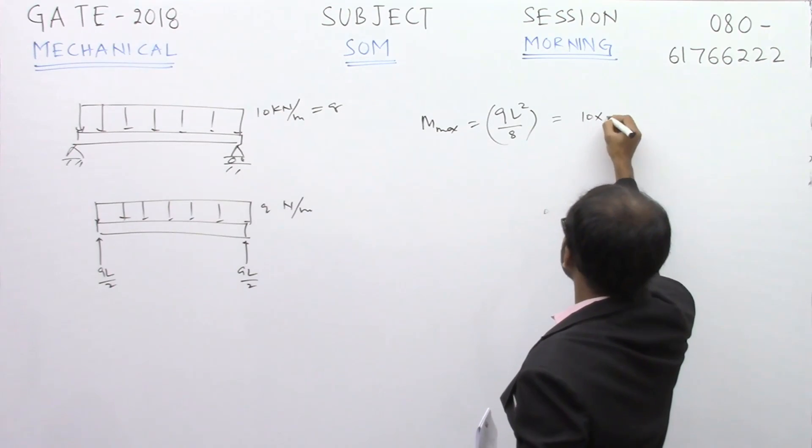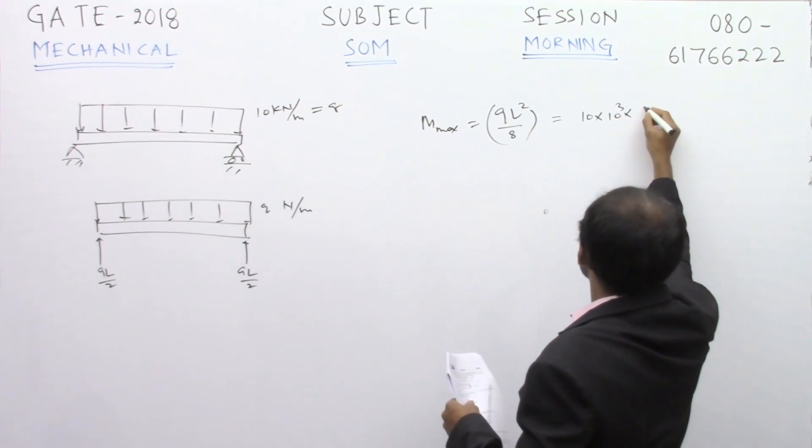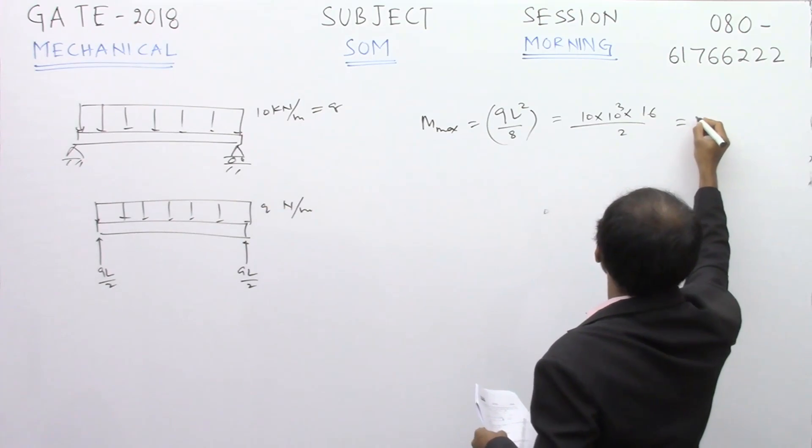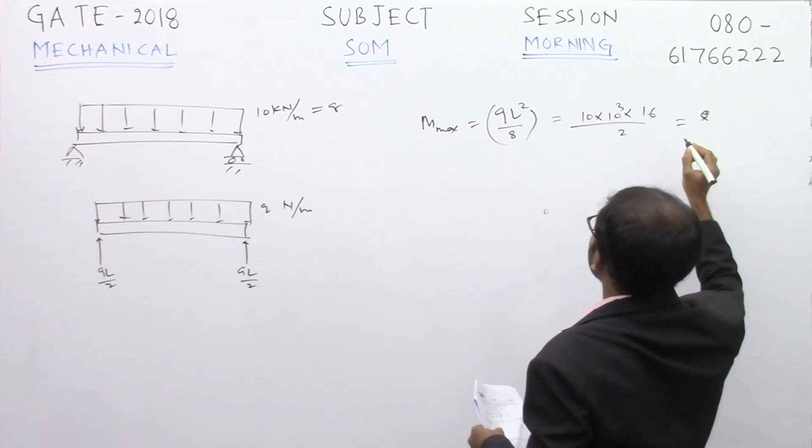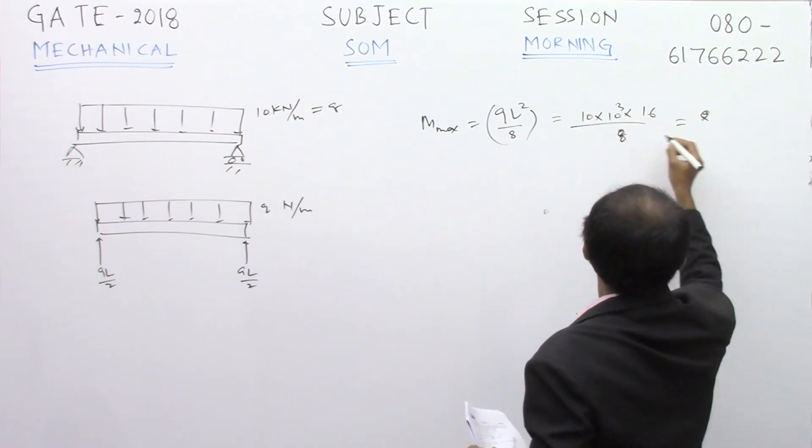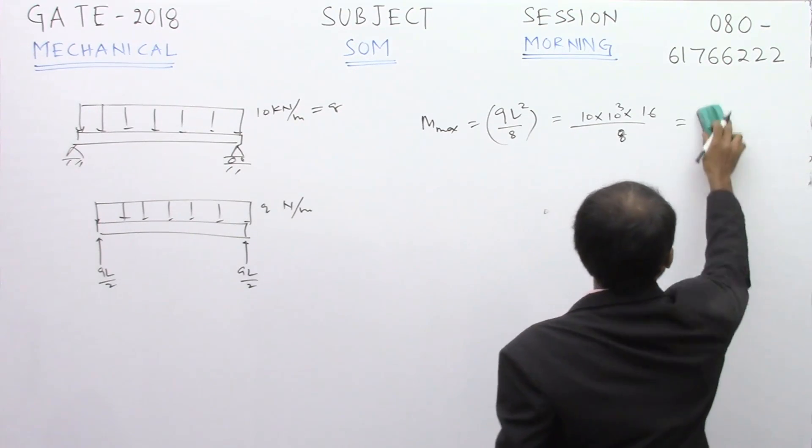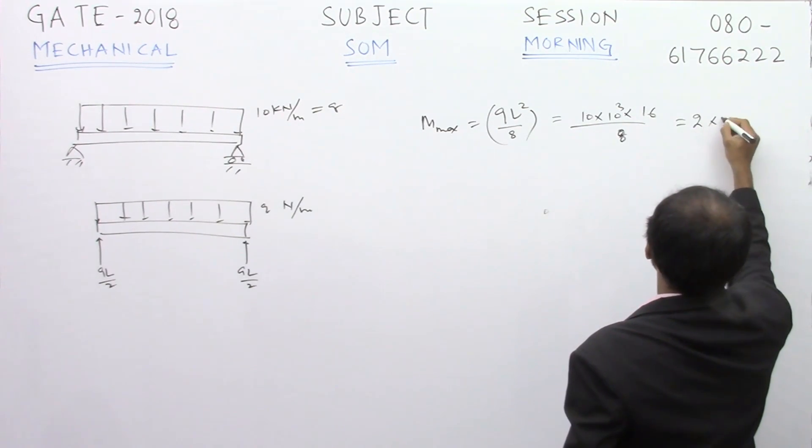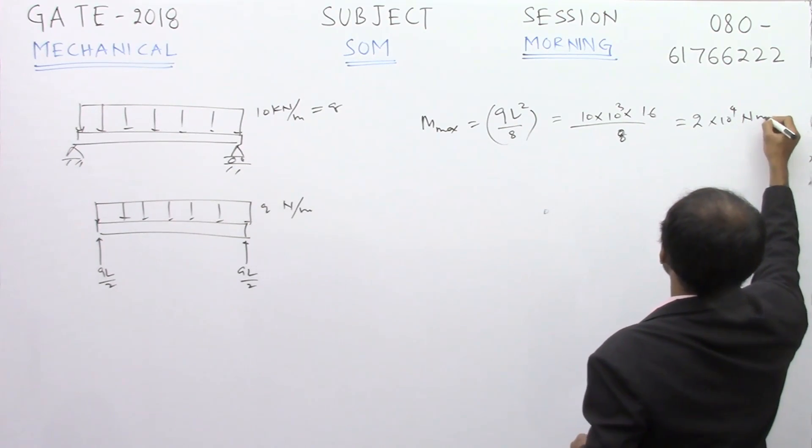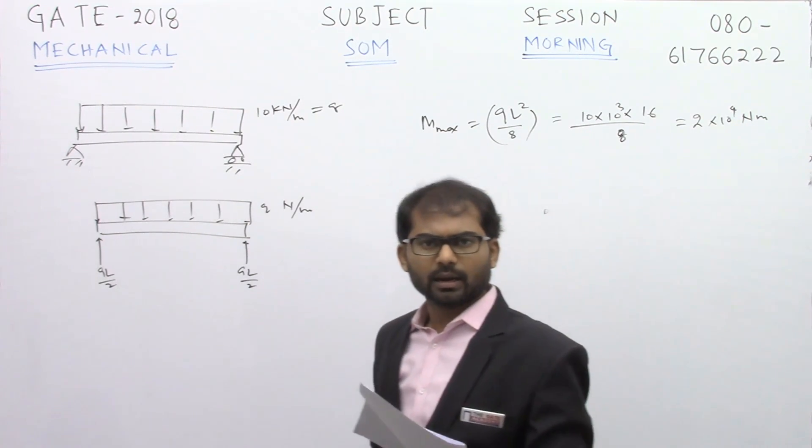This is equal to 10 × 10³ × length. Length is equal to 4 meters, so 16 by 8. This comes out to be 2 × 10⁴ newton-meters. So you got the bending moment.